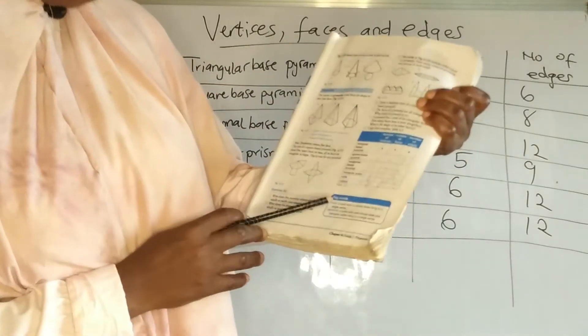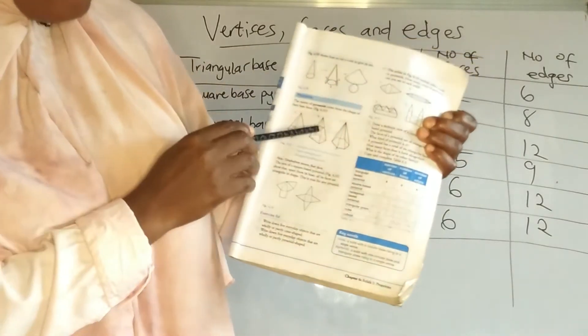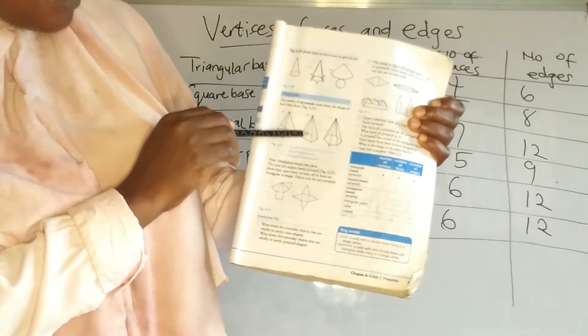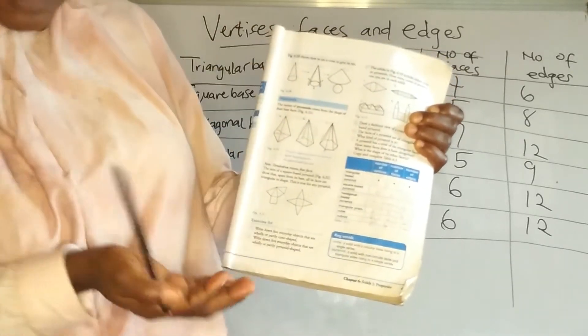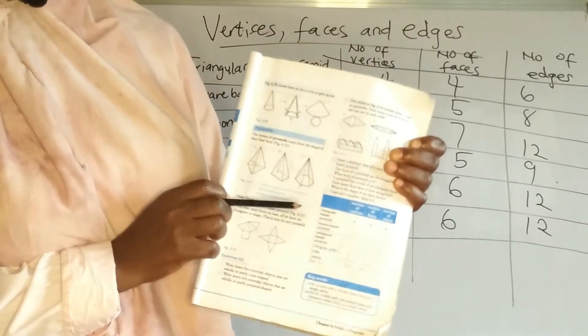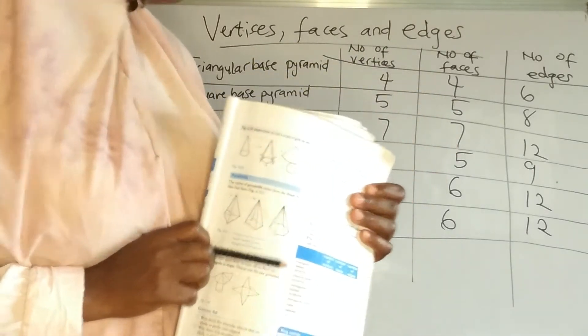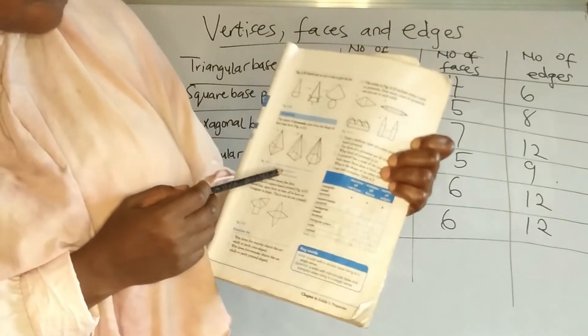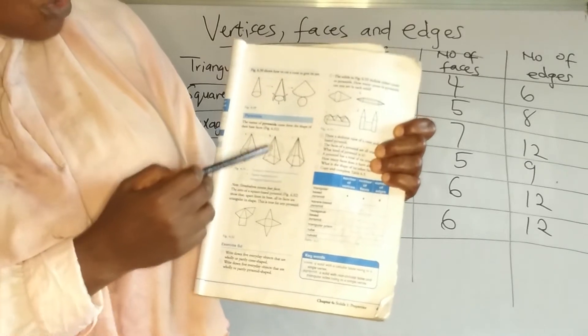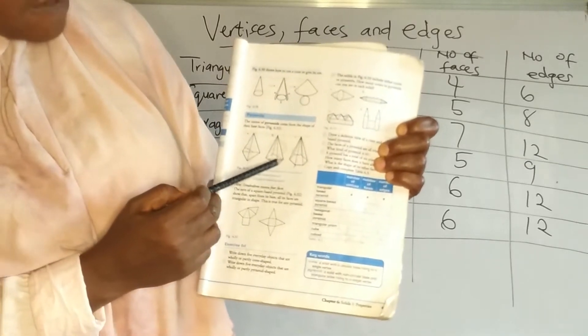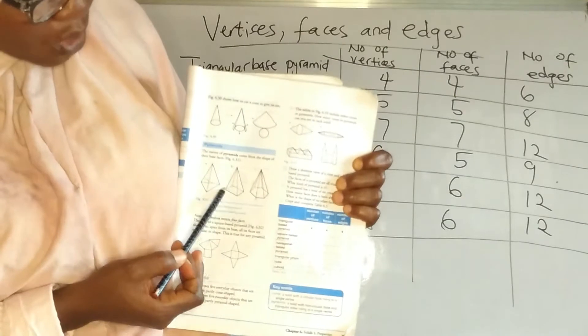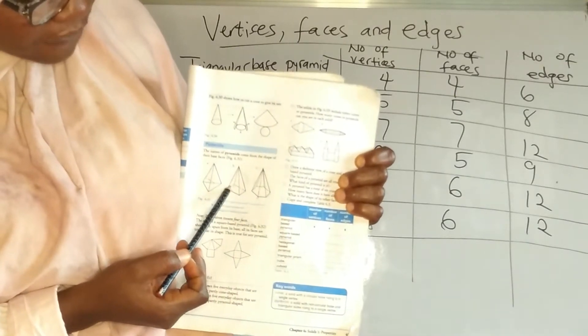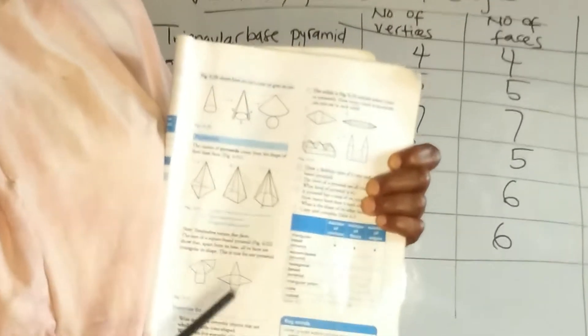The square-based pyramid has five vertices. For the faces: one face here, another face — two, another one — three, the one at the back — four, then the base is five, making five faces. Now for the number of edges, it has eight edges. Let's count: one, two, three, four, five, six, seven, eight — that's eight edges.